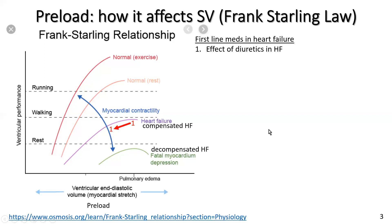We now come to first-line medications in heart failure. The first is the effect of diuretics. Diuretics will take someone from the top of their curve back to the left — for the amount of filling of the heart, drying someone out with a diuretic will take them to the left on their curve. It won't sacrifice stroke volume very much, but what it will do is prevent someone from going into acute pulmonary edema or even decompensated heart failure.